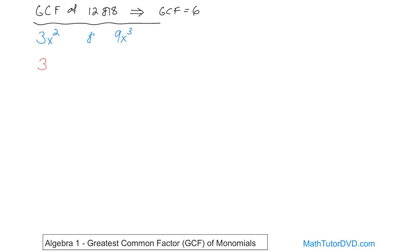The number 3 is the greatest common factor of both of those, because 3 times 1 is 3, 3 times 3 is 9. Obviously, I can't use 4, 5, 6, 7, 8, and so on, because none of those numbers will multiply by anything to give me 3. So 3 is the biggest number that is a factor common to both of these.